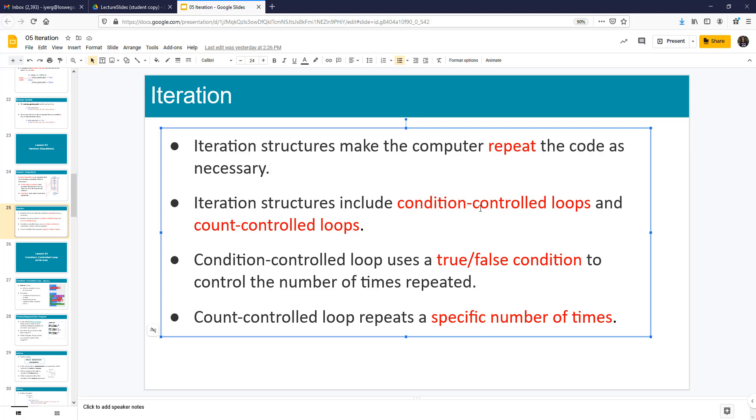So that is called a condition control loop, or we can have count control loops. So the condition control loop checks for a condition. When that condition is true, the loop is executed. When that condition is false, the loop stops.